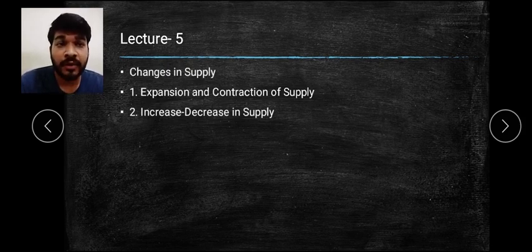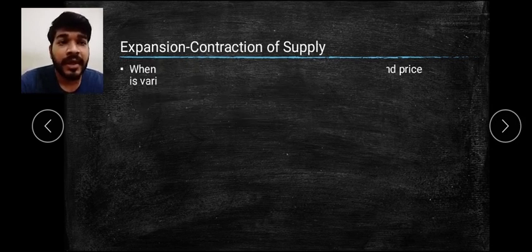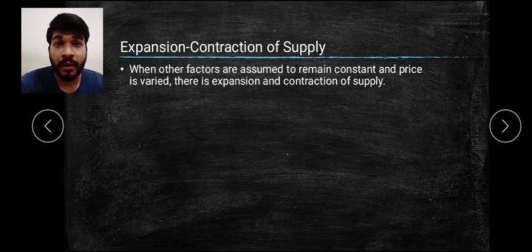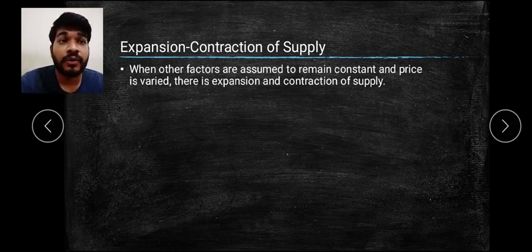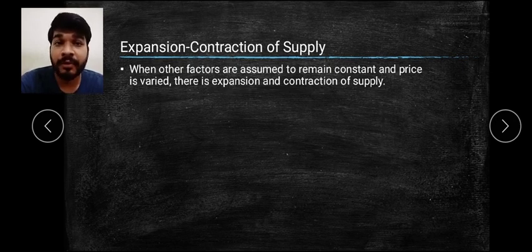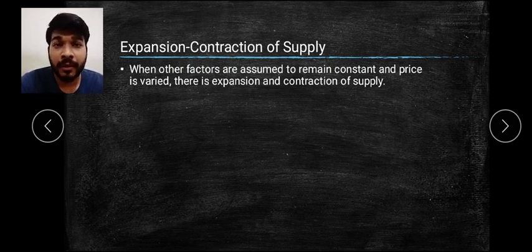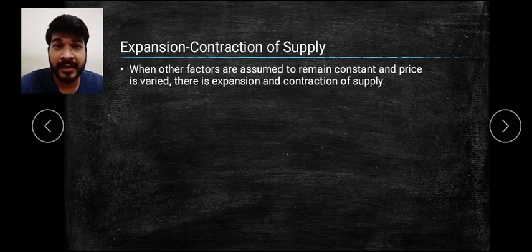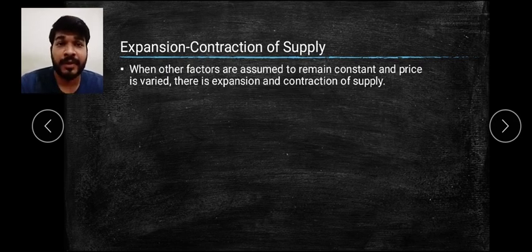Today we are going to learn about expansion and contraction of supply. When other factors - that is, factors other than price affecting supply - are remaining constant, such as level of technology, expectations regarding future prices, factor prices (which is nothing but cost of production, raw materials, labor, capital), and other factors like government policies, then the law of supply is applied.